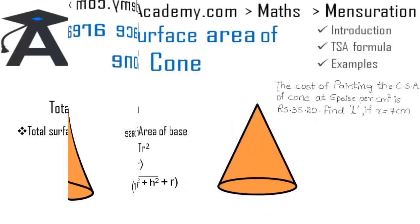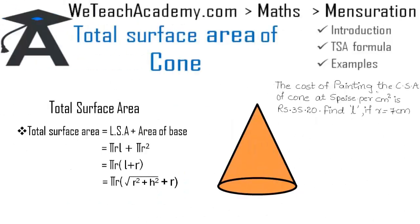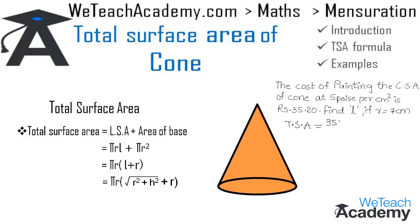Coming to the next example. The cost of painting the curved surface area of a cone at 5 paise per cm² is ₹35.20. Find the slant height if the radius is 7 cm. Converting ₹35.20 to paise gives 3520 paise. The curved surface area = 3520 ÷ 5 = 704 cm².